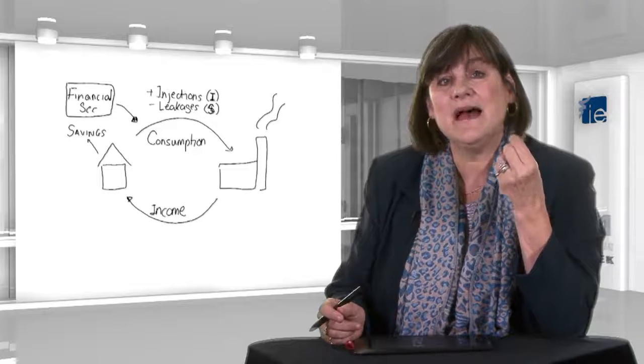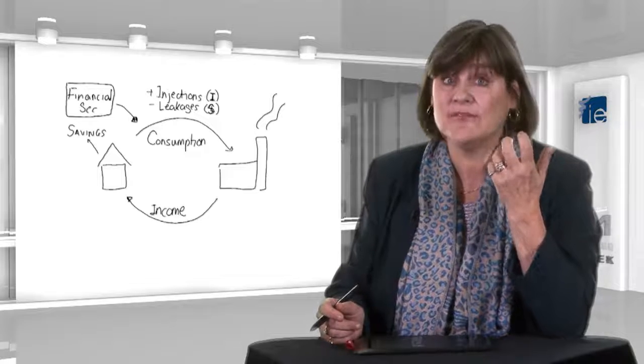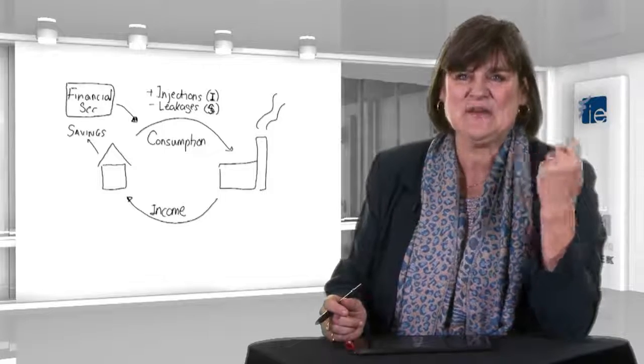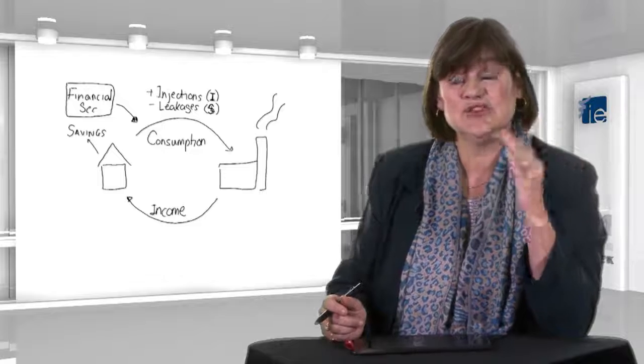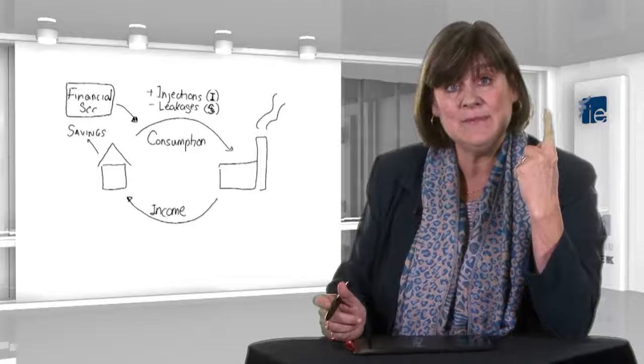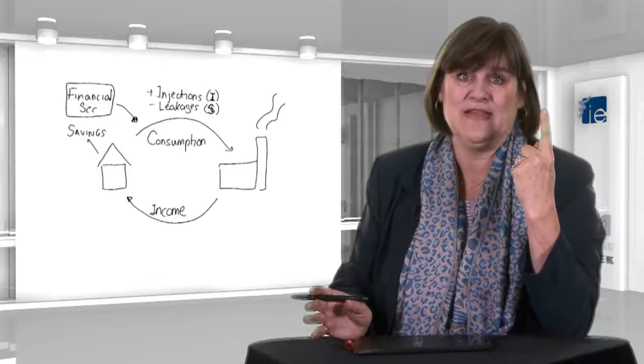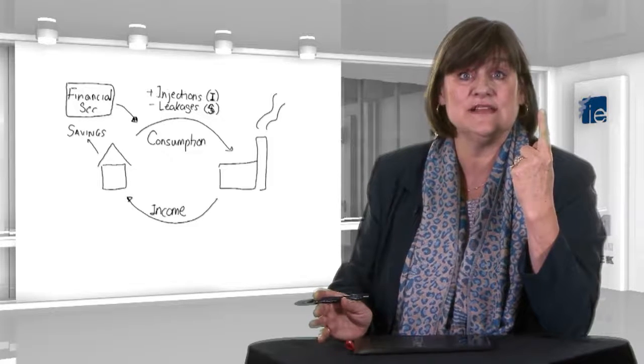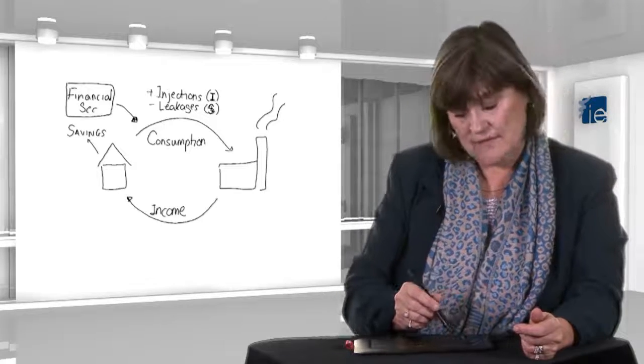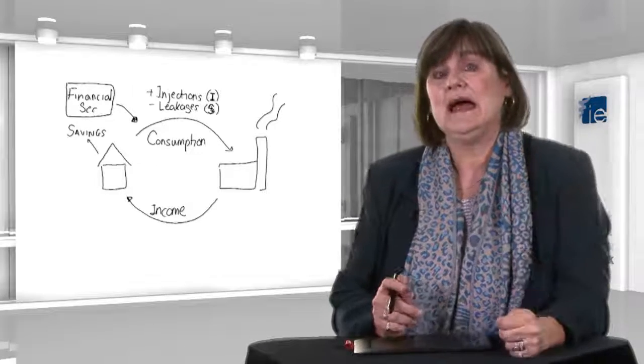And in this respect, it's important to think about the financial crisis. What happened when the financial crisis started? Well, people became very afraid because they realized that their house wasn't worth what they thought it was, that their mortgage was a lot bigger than they thought it was relative to the value of their house, that they might lose their job. They started saving more. Leakages grew. At the same time, investors looked at the future and they said, wow, this doesn't look good. I don't want to build that new factory because I don't know if I'm going to sell what I would produce in it next year. So they started investing less. So the leakage became greater, the injection became smaller. The economy went straight down. And that's the beginning of the financial crisis.